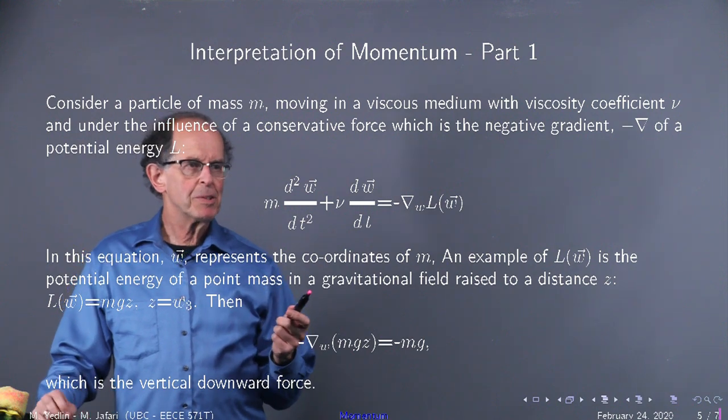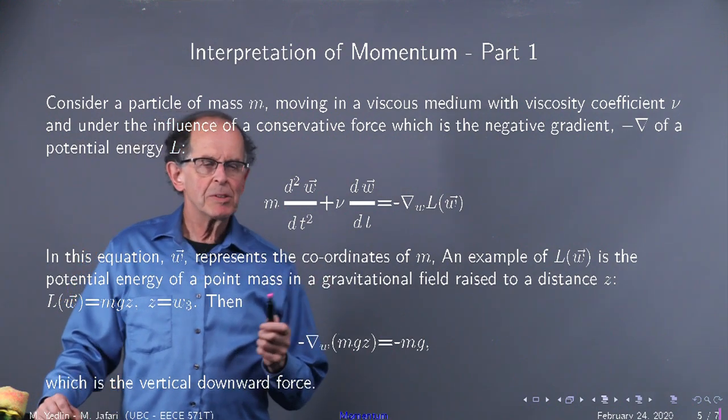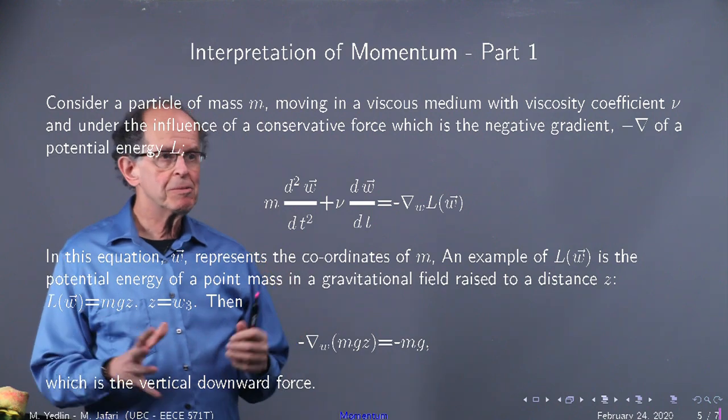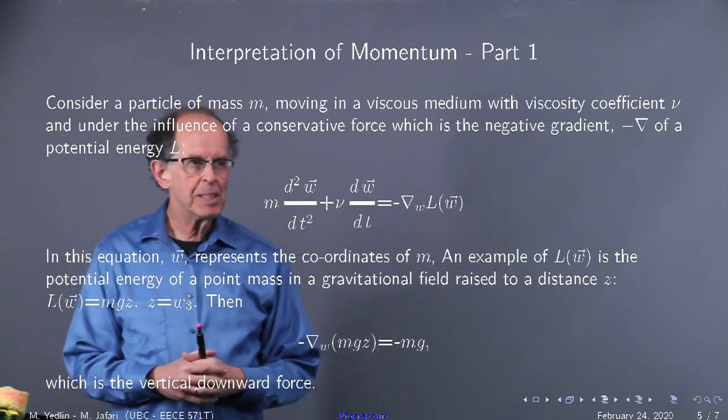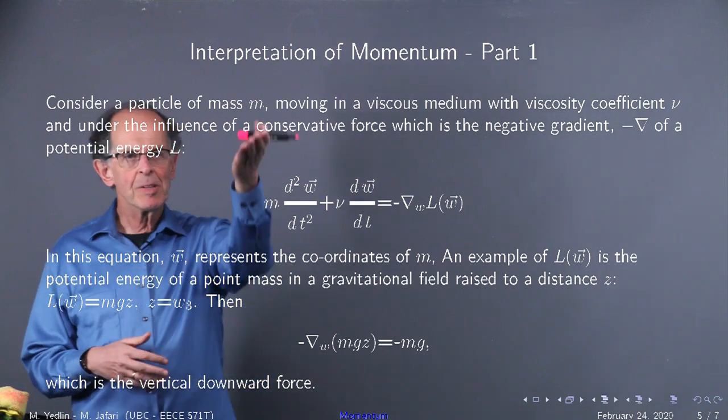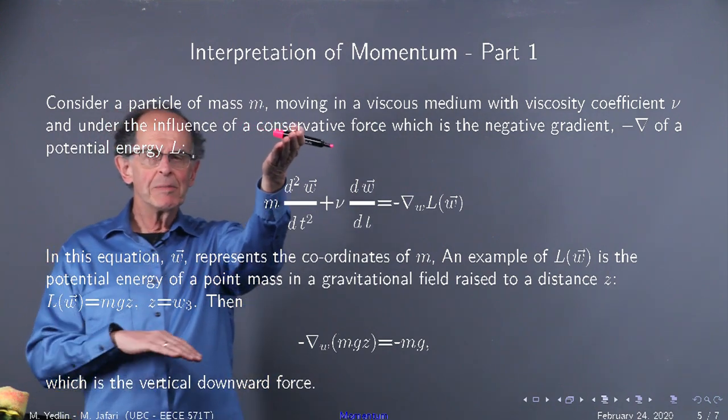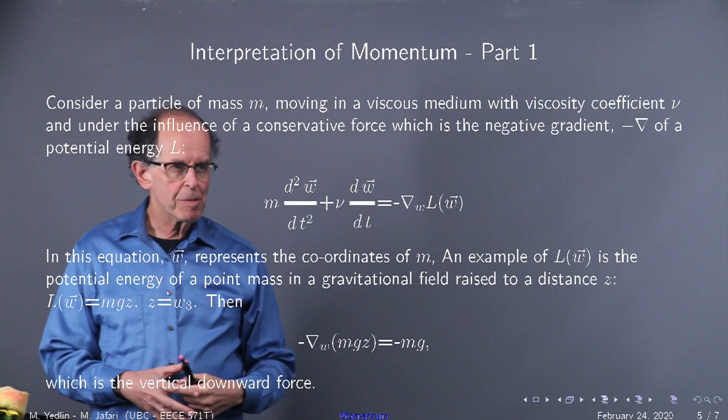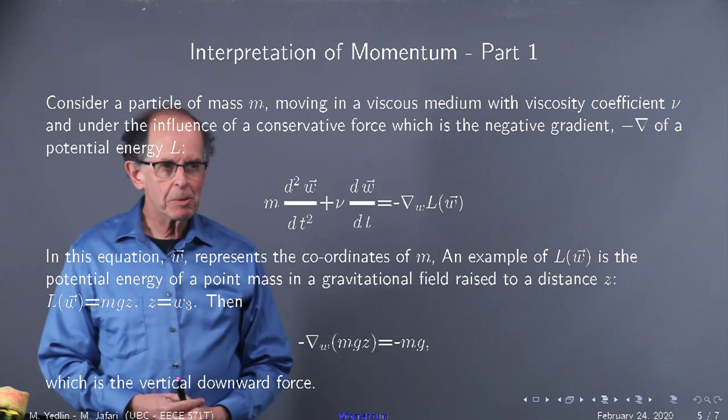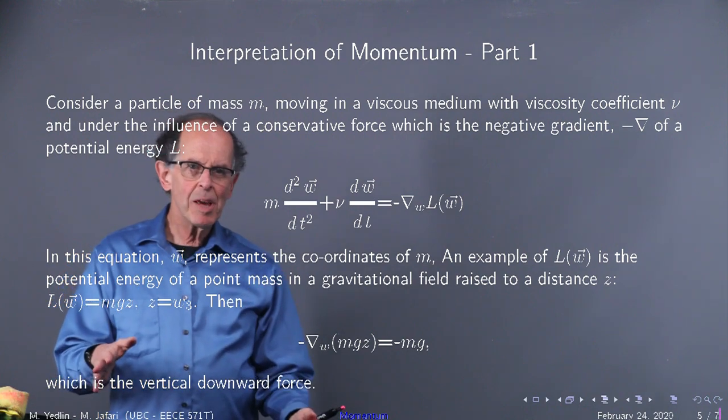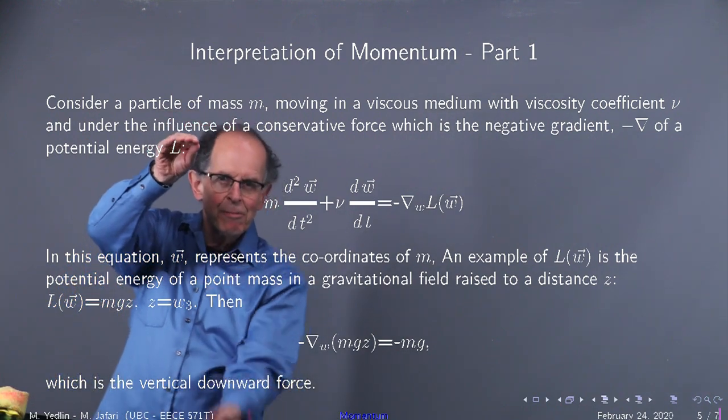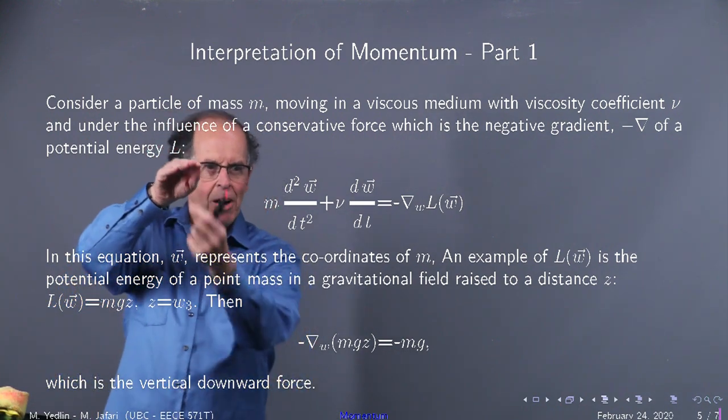In this equation, we can see, for example, that if L was the potential energy, it's like a potential energy function of a point mass in a gravitational field. Then, when you raise the mass a height z above z equals 0, or z is the third coordinate, and take the gradient as shown below, what do you get? Minus mg, the attractive force pulling down on the mass.